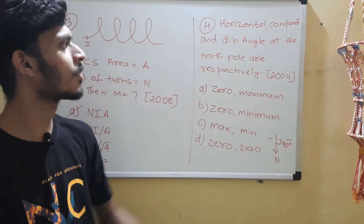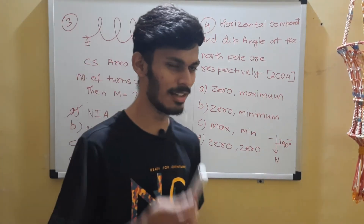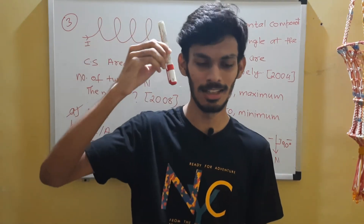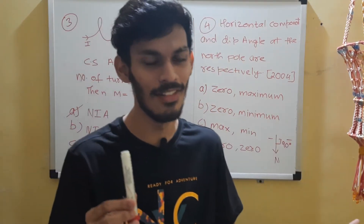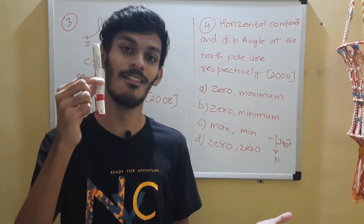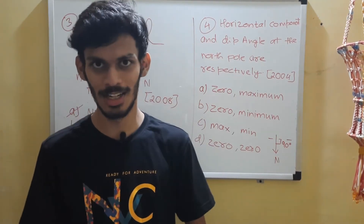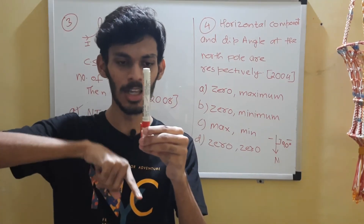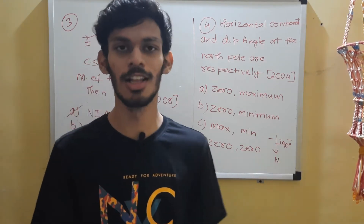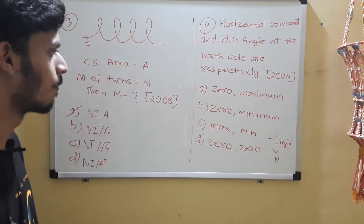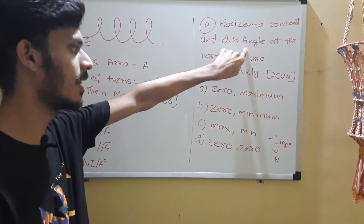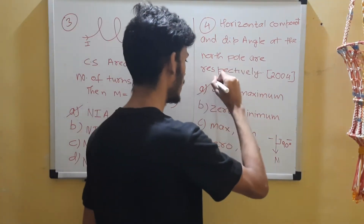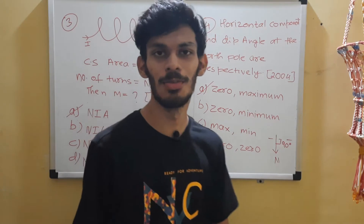The needle is pointing in the vertical direction, which means the net field is in the vertical direction — there is no field in the horizontal direction. So the horizontal component of the magnetic field is 0. Horizontal component: 0, and the dip angle: maximum 90 degrees. Option A is the correct choice.